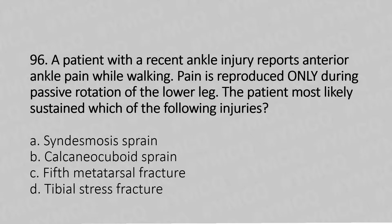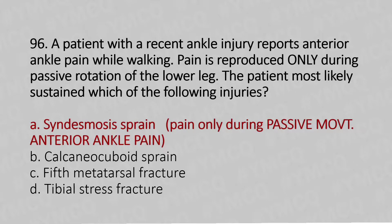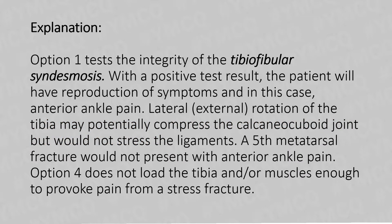Option A: syndesmosis sprain. Option B: calcaneo-cuboid sprain. Option C: fifth metatarsal fracture. Option D: tibial stress fracture. The answer is Option A — syndesmosis sprain. Pain only during passive movement and anterior ankle pain. The squeeze test tests the integrity of the tibio-fibular syndesmosis; a positive result reproduces symptoms, in this case anterior ankle pain.